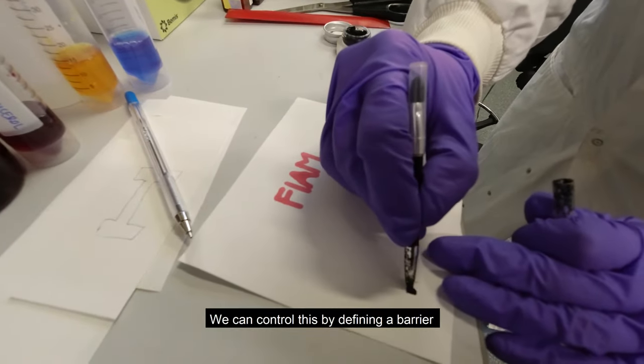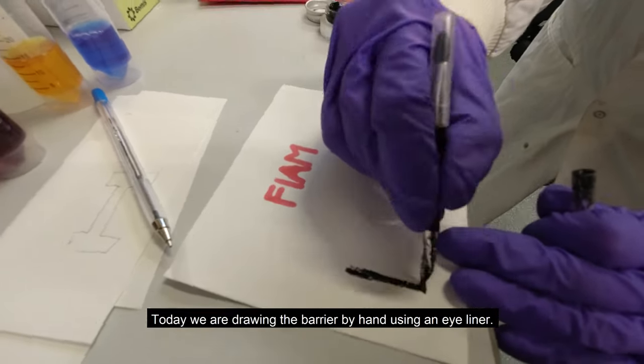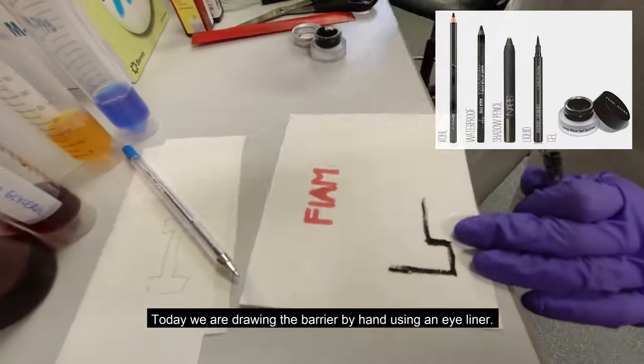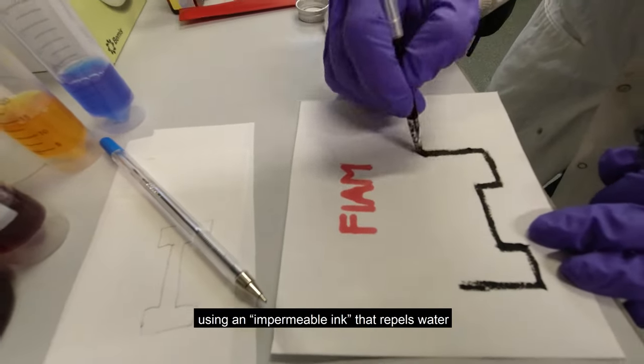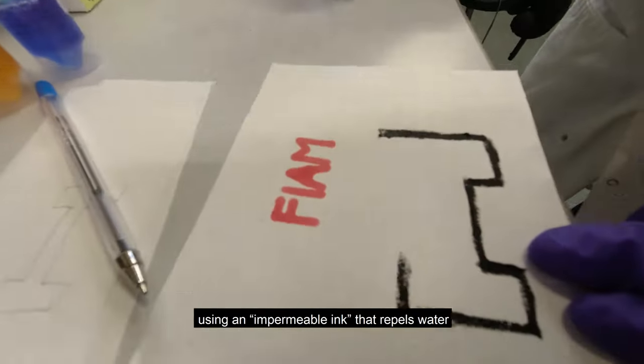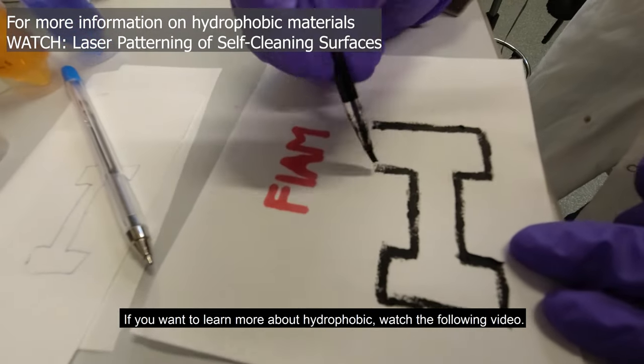We can control this by defining a barrier that blocks the flow of liquid. Today we are drawing the barrier by hand using an eyeliner. We could also use the robot to print this barrier using impermeable ink that repels water. This is called hydrophobic. If you want to learn more about hydrophobic, watch the following video.